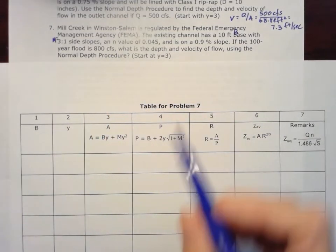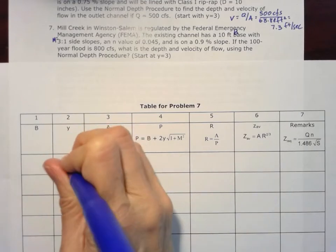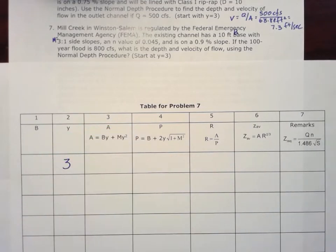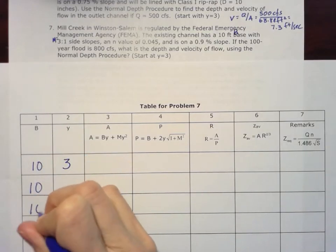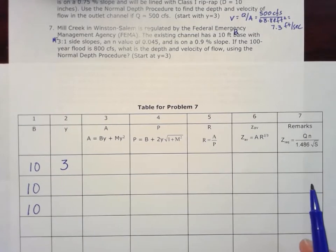So we want to figure out the depth and velocity, and we're going to start at Y equals 3, and then we're going to have this consistent width of 10 feet. Our B is going to be 10, so we can write that down a few times.